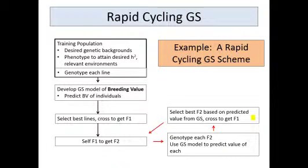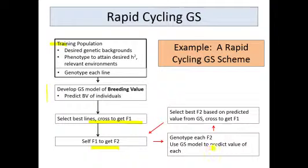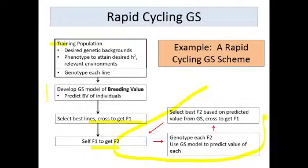Here is just a basic outline of a general rapid cycling genomic selection scheme. It of course always starts with your training population. You use the data from that training population, develop the models, you cross the best, get F1s, the F1s can be selfed to get F2s, the F2s are genotyped, you predict their value, cross the best F2s, and start over again. This is one cycle of genomic selection, and it can be completed in two seasons. That's why we call it a rapid cycle method.